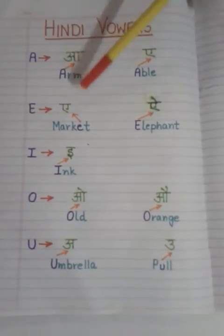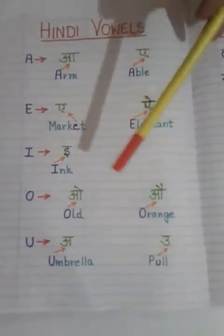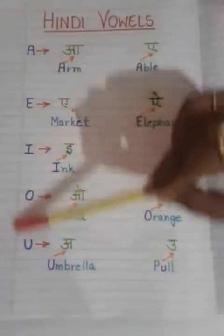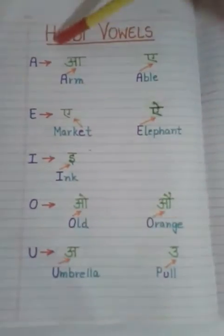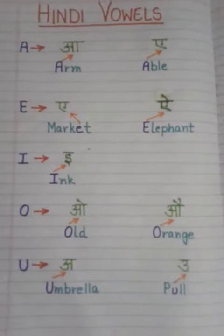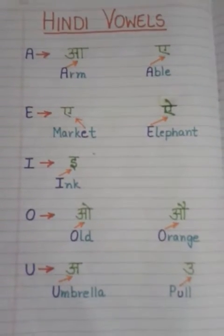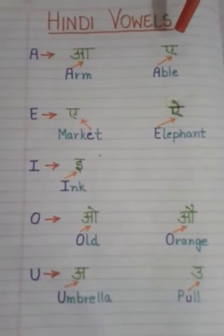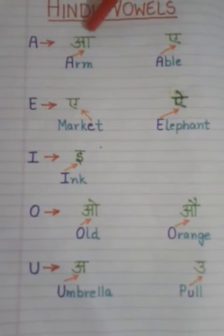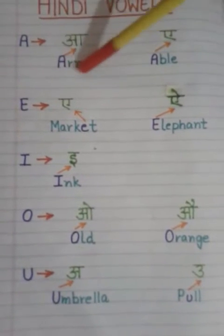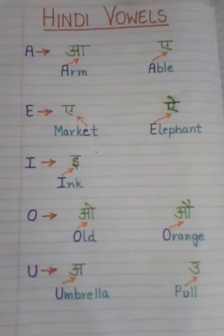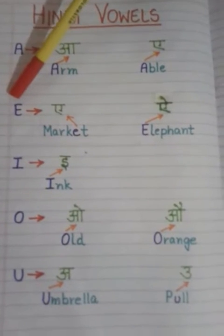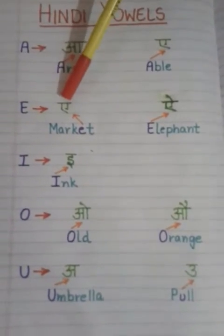The Hindi vowels are: A, AA, E, O, and others. I have not listed them in proper Hindi order but in English order, so please try to understand this way, since this video is for teaching Hindi through English. You know there is an 'A' sound in English — Hindi also has that. The letter A is used for both the short 'a' and the long 'aa' sounds. For example, 'arm' gives the 'aa' sound, and 'able' gives the other sound for that letter.